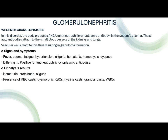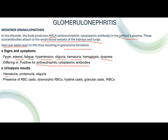The fourth immunologic glomerulonephritis is Wegener granulomatosis. The antibody causing this is ANCA — anti-neutrophilic cytoplasmic antibody — found in the patient's plasma. These autoantibodies attach to the small blood vessels of the kidneys and lungs, and the vascular wall reacts resulting in granuloma formation. Signs and symptoms include fever, edema, fatigue, hypertension, oliguria, hematuria, hemoptysis, and dyspnea. Identified by being positive for ANCA. In urinalysis: hematuria, proteinuria, oliguria, RBC casts, dysmorphic RBC, hyaline, granular, and white blood cells.